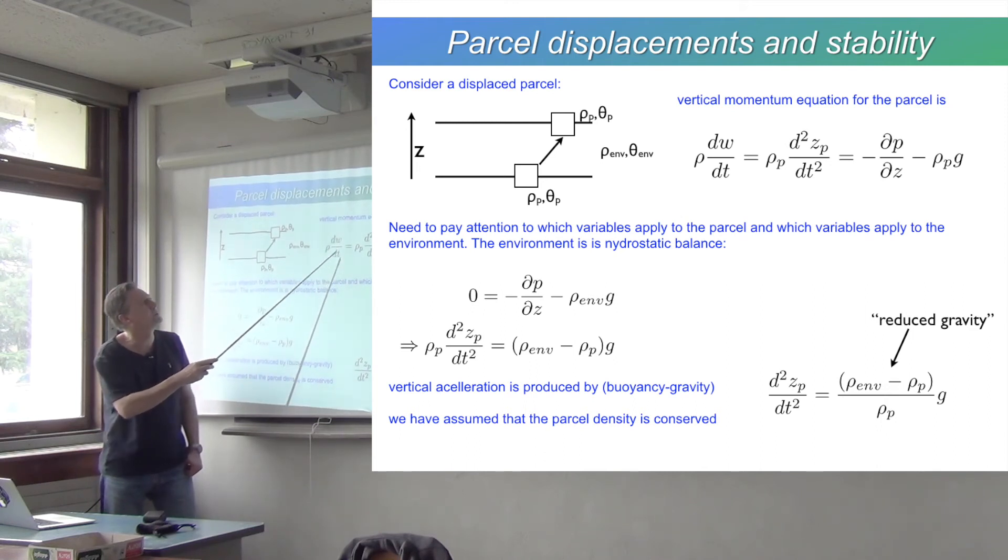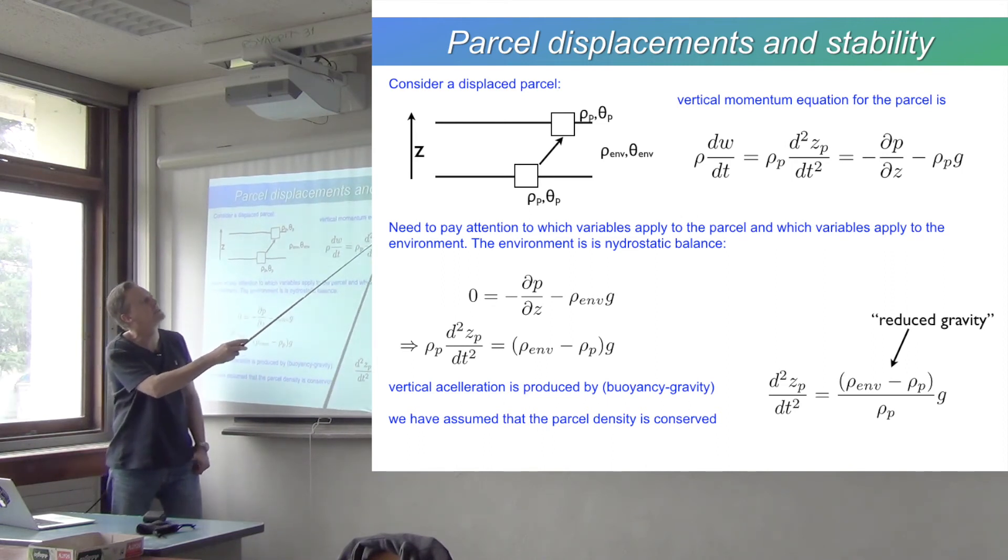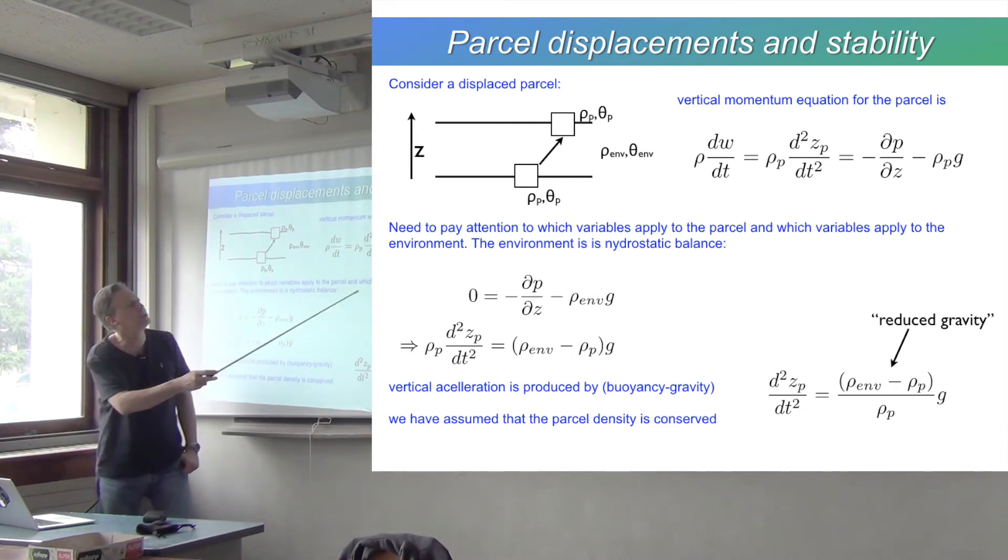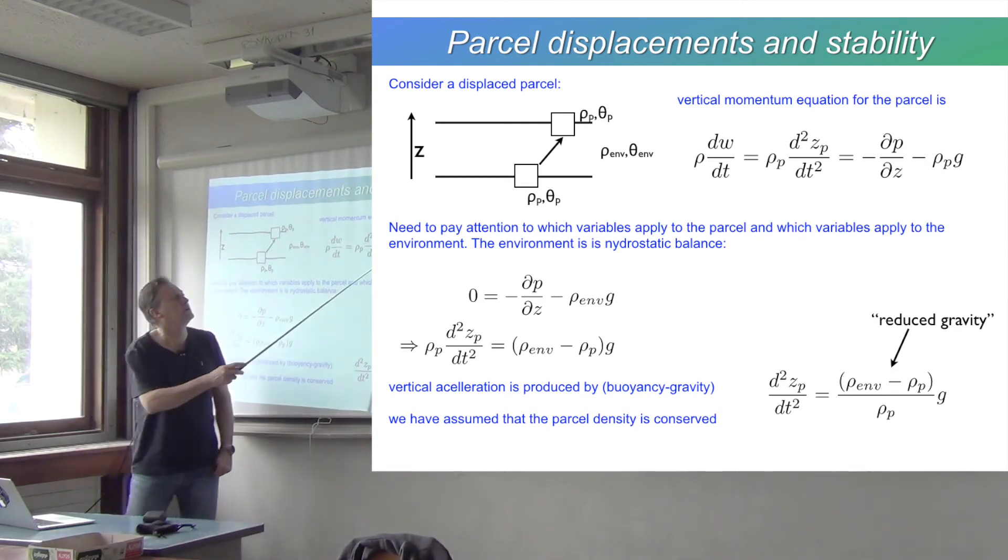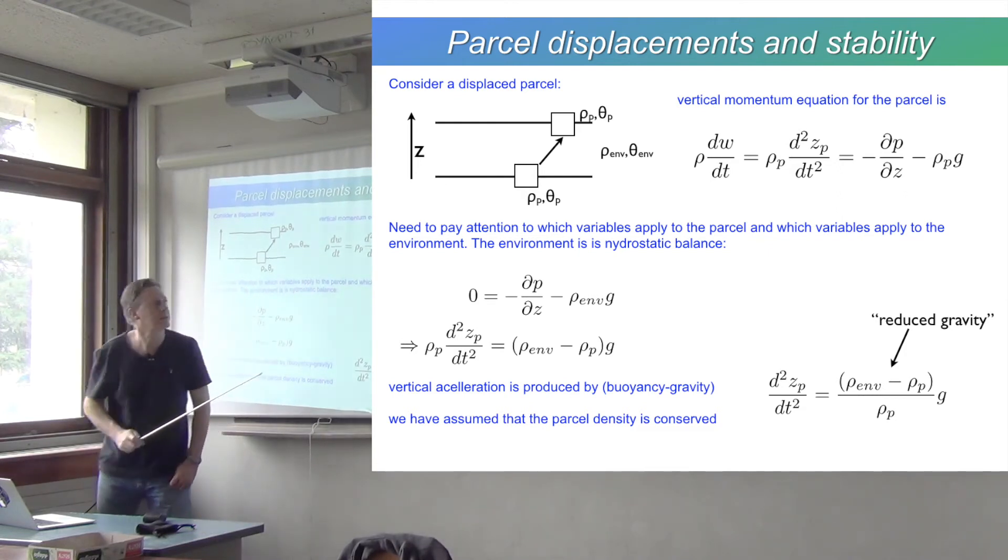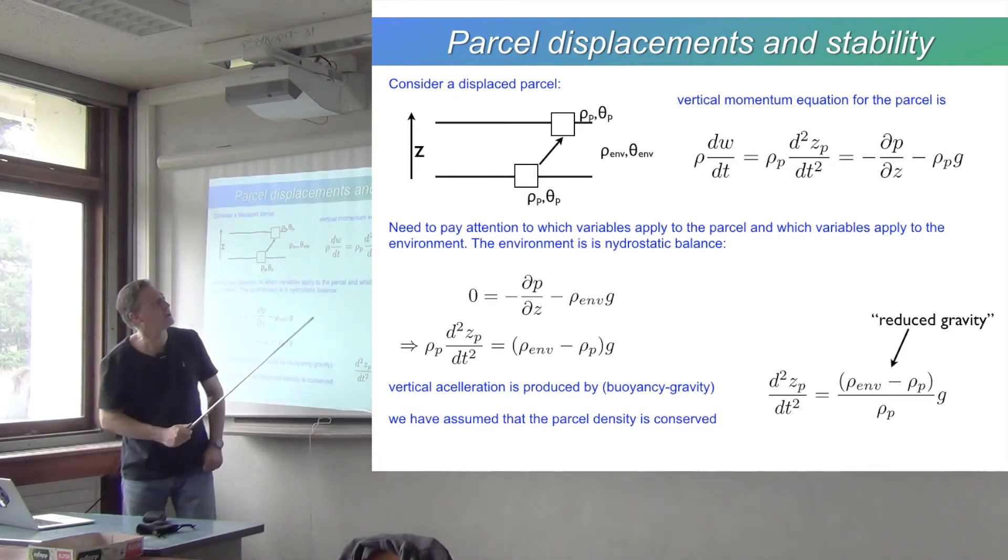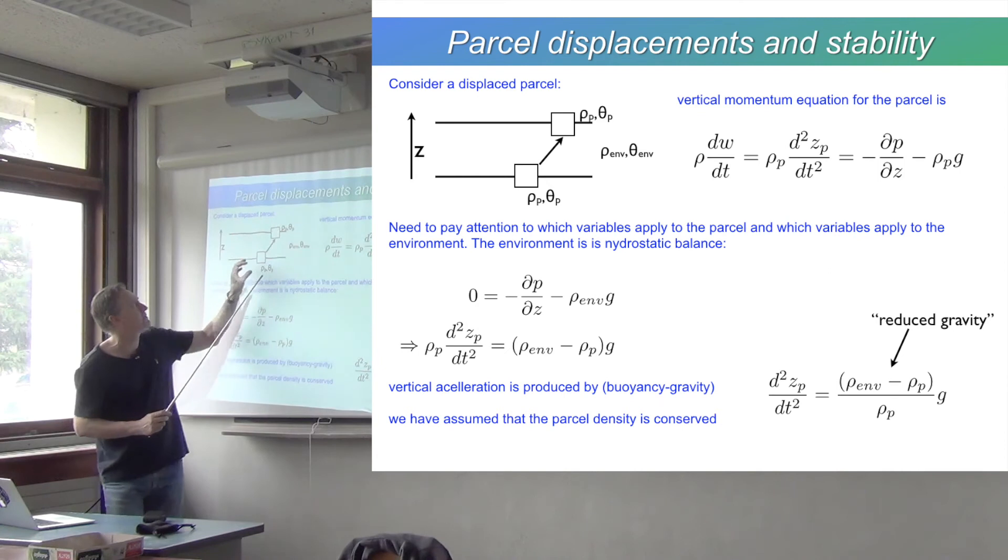It's going to change its pressure as it goes up to be the same as the surrounding pressure, but it's going to keep its density from its original position. What does that look like in terms of the vertical momentum equation for this parcel? The force imbalance will give us the vertical acceleration: ρ dw/dt, which is the parcel density ρ_p times d²z_p/dt², where z_p is the position of the parcel.